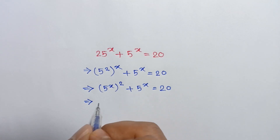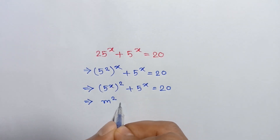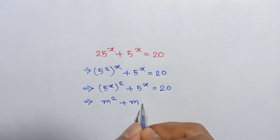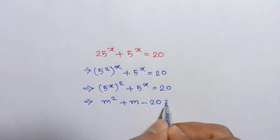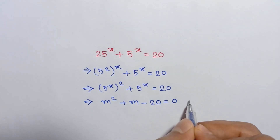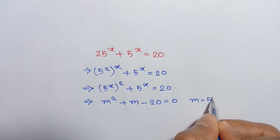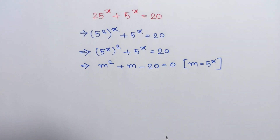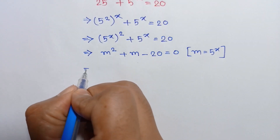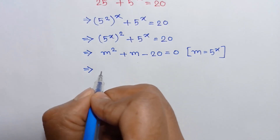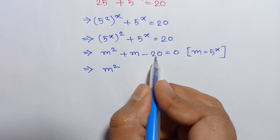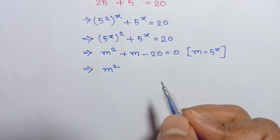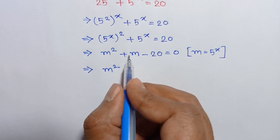If we consider 5 to the power x as m, we can write m squared plus m, and taking this 20 to the left side we will have negative 20 is equal to 0, where m is equal to 5 to the power x. Now 20 can be written as 5 times 4, and 5 minus 4 is equal to 1.